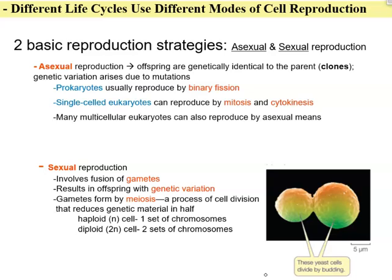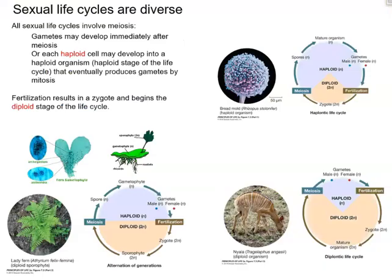Sexual reproduction involves gametes, so an organism needs to be able to produce two different types of gametes. When those gametes fuse during the process of fertilization, the chromosome number is restored. Sexual reproduction gives us genetic variation, which is very important for natural selection and evolution. Gametes are formed by meiosis, and meiosis has two sets of divisions — it produces four cells from one, and those cells are haploid. Sexual life cycles are diverse and all involve meiosis and the production of gametes.